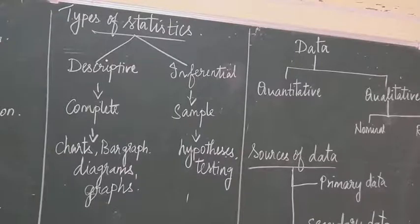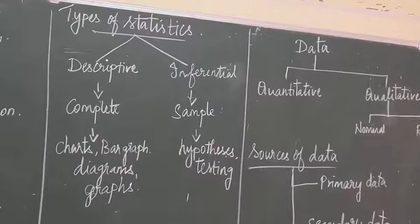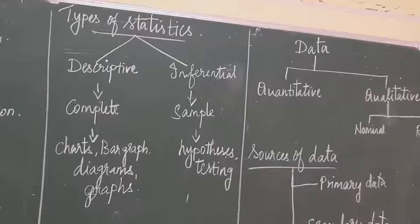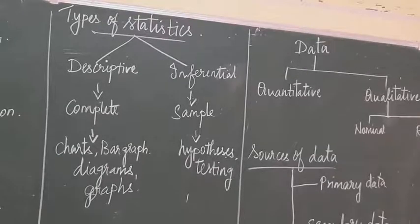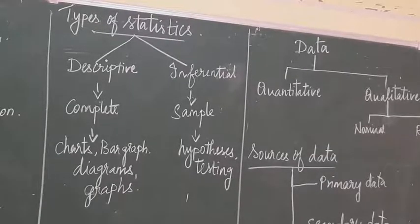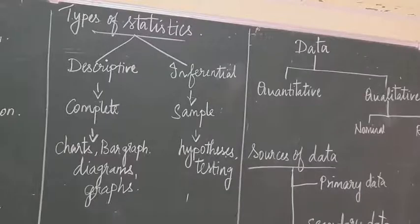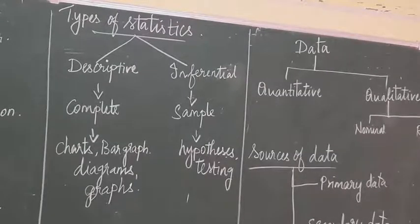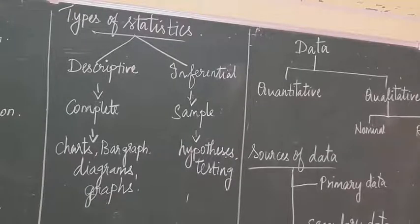In inferential statistics, we give only a hypothesis — that is, assumptions and testing methods. It uses hypothesis testing and predicts on the basis of outcomes. Inferential statistics helps to predict the future, though it won't be exact. So there are two types of statistics: one is descriptive, and the other is inferential.